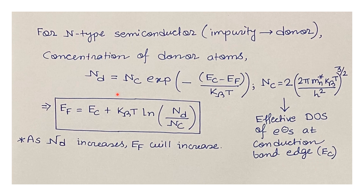Taking the logarithm on both sides and rearranging, the Fermi level of an n-type semiconductor is: EF = EC + kBT·ln(ND/NC). At a given temperature, NC is constant, so EF depends only on the donor concentration ND. As ND increases, the Fermi level EF of the n-type semiconductor increases.